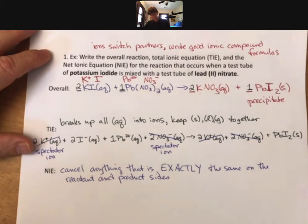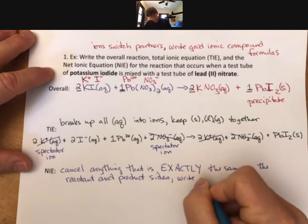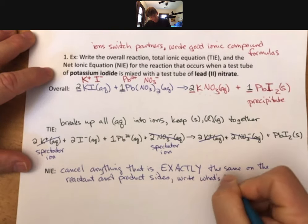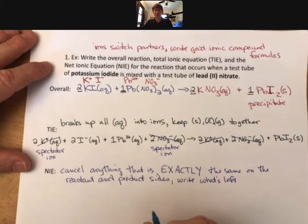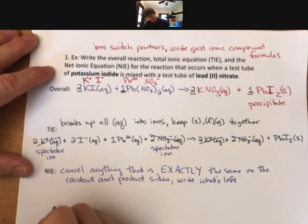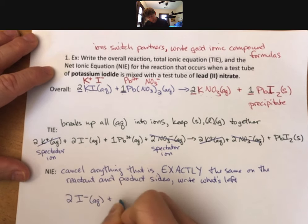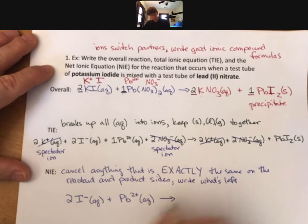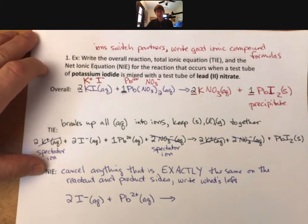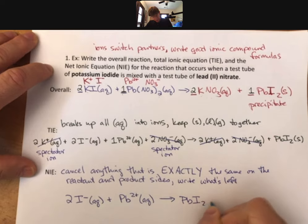And we'll talk about that in a minute. And so now cancel everything - anything that is exactly the same on the reactant and product sides - write what's left, which is a fun thing to say. And therefore, make a little smiley face on your page right after that. And now let's write what's next - or what's left. 2I- plus 1, or you don't have to write the 1. And this is my net ionic equation. The last thing to write is PbI2 solid.